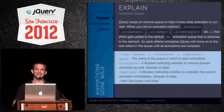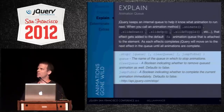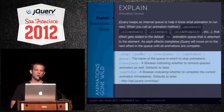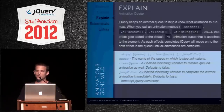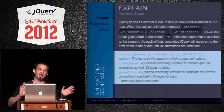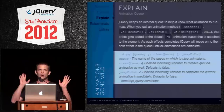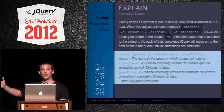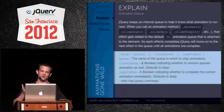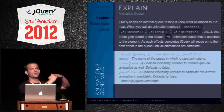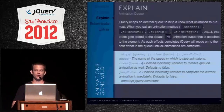Sometimes you just want it to stop. Thankfully there is a stop method. There are two important parameters: clearQueue and jumpToEnd. clearQueue says: if there are ten other animations in the queue, just wipe them out — the user moused out, don't do all that. jumpToEnd says: if you're in the middle of animating, go ahead and finish where you were heading anyway, so you don't end up with a half-animated element.